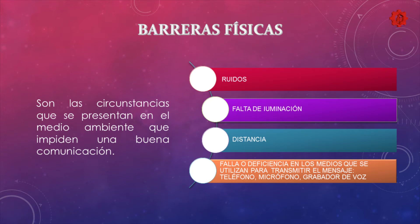Las barreras físicas se encuentran generalmente en el canal. Puede ser, por ejemplo, que haya mucho ruido, que falte iluminación, que la distancia sea muy grande, que falle o haya deficiencia en los medios que se utilizan para transmitir el mensaje: el teléfono, el micrófono, el grabador de voz o, circunstancialmente, la distancia.